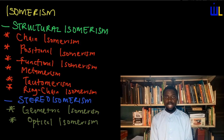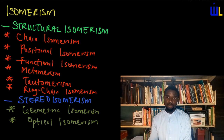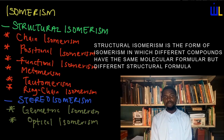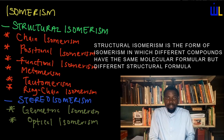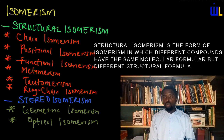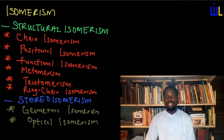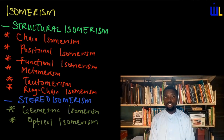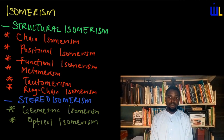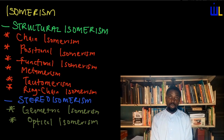Isomerism is broadly divided into two parts: structural isomerism and stereoisomerism. Structural isomerism is the form of isomerism in which different compounds have the same molecular formula but differ in structure. When the difference is based on structure, you refer to it as structural isomerism. There are six types of structural isomerism: chain isomerism, positional isomerism, functional isomerism, metamerism, tautomerism, and finally ring-chain isomerism.